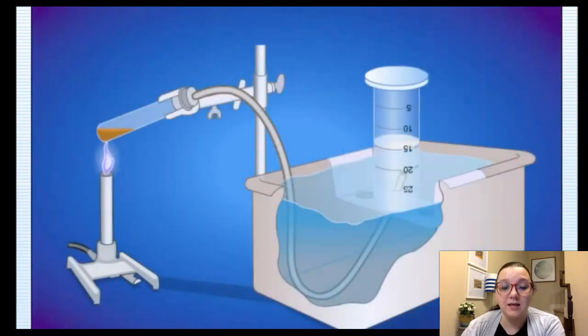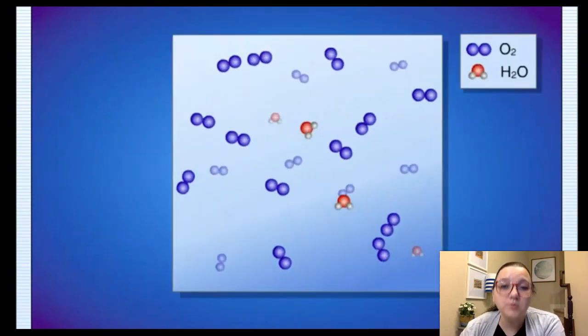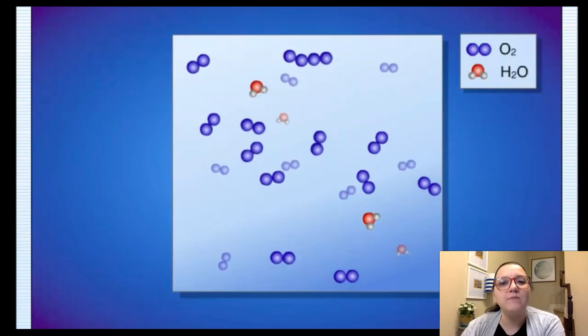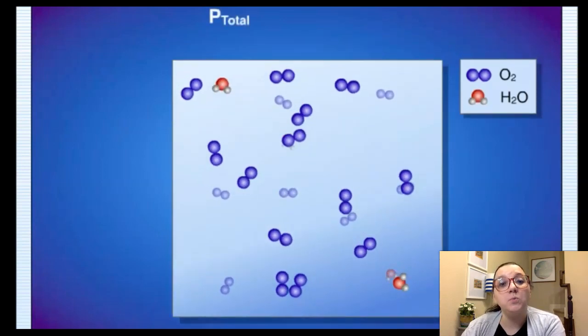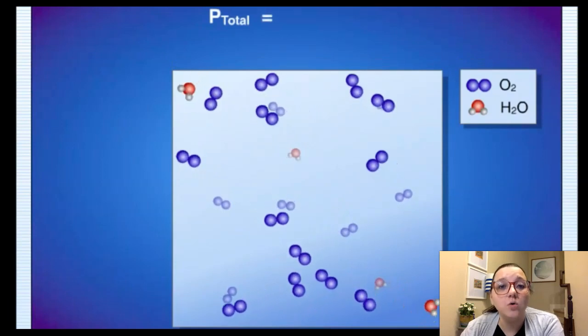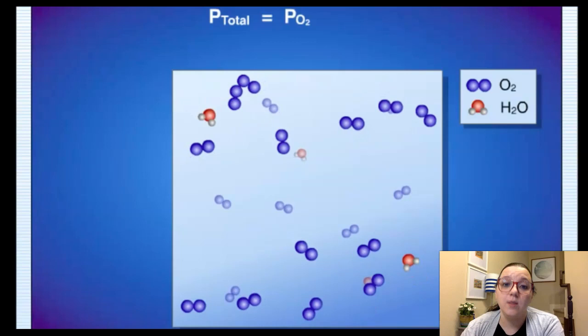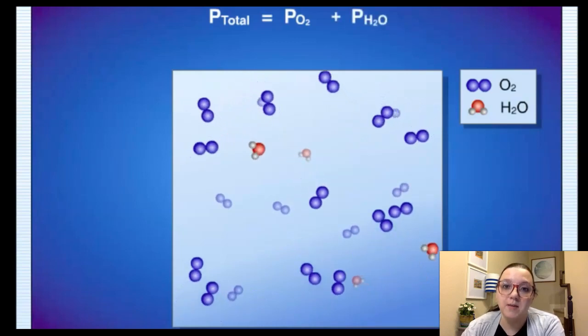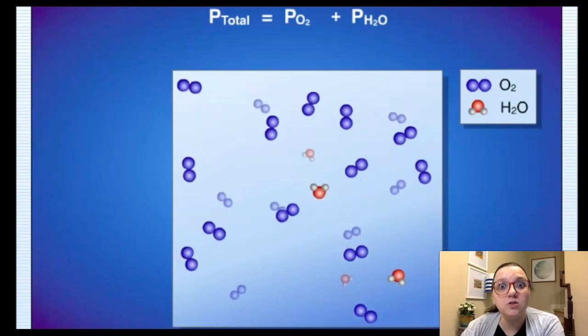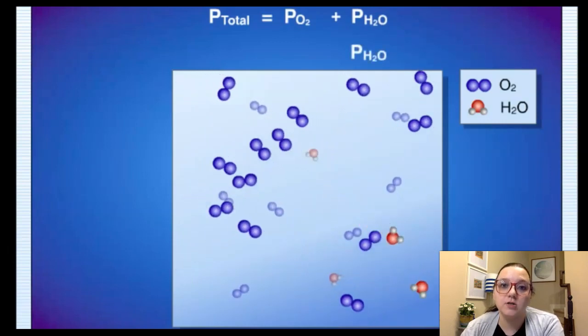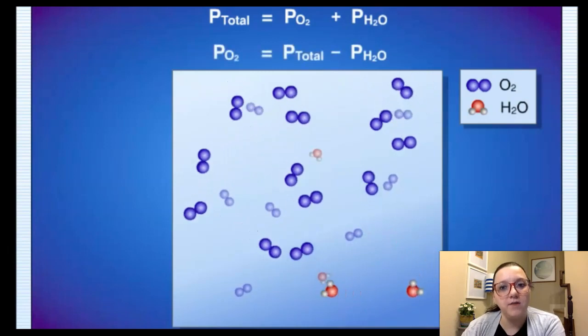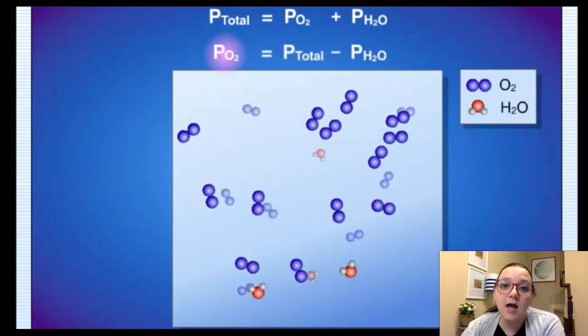So to see that on a more molecular level here, we're going to zoom in on that sample of gas that we're collecting. And what you'll be able to see is that while mostly there's oxygen gas there, the gas that was being produced, we also have a small amount of water vapor. And so when we're addressing the pressure in that container, the total pressure would be both the pressure of the oxygen that we made, but also a little bit of water vapor. So if I want to do a calculation with just the pressure of the gas that I'm recording, I'm going to have to look up the water vapor value on a table and subtract that from the total pressure of the gas. That would be the only way that I could get just the pressure of the oxygen by itself.